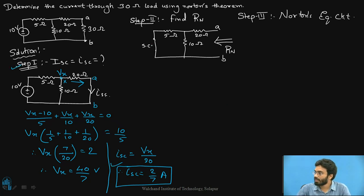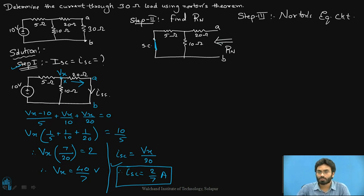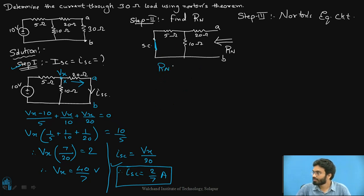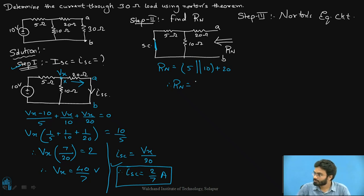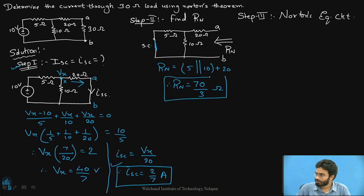Now moving to step two: we have eliminated the voltage source by replacing it with a short circuit representing its ideal internal resistance of zero ohms. Looking back into the circuit to identify Rn, it is clear that we have 5 ohms in parallel with 10 ohms, and that combination in series with 20 ohms. Calculating: 5 parallel with 10, in series with 20 gives Rn = 70/3 ohms.